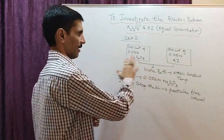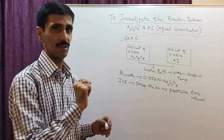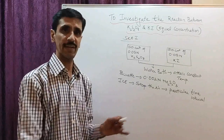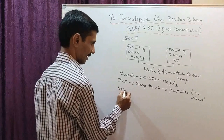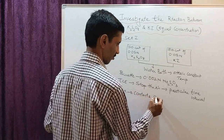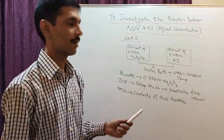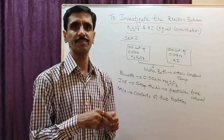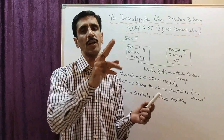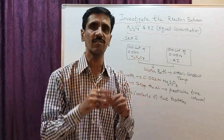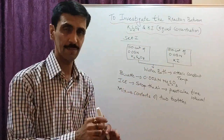Once all arrangements are in place — the starch indicator is prepared, the burette is filled with 0.002 normal sodium thiosulfate — next, mix the contents of the two bottles. You can transfer K2S2O8 into KI or vice versa, since both solutions have equal concentrations and equal volumes. After mixing, one bottle gets empty; keep it aside.